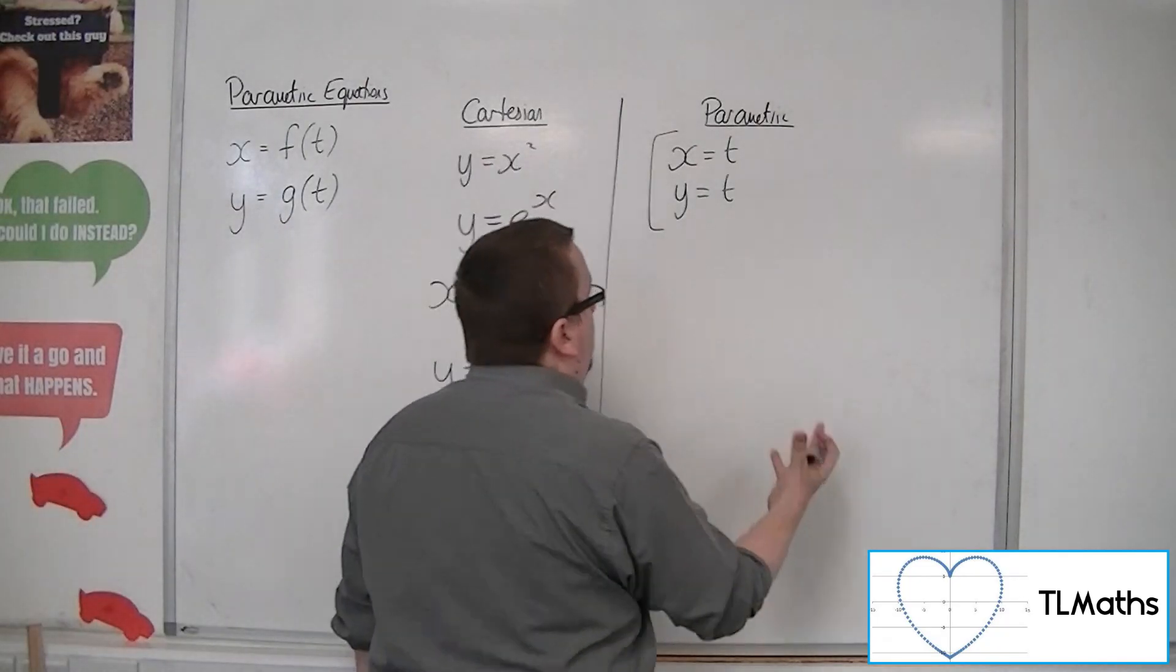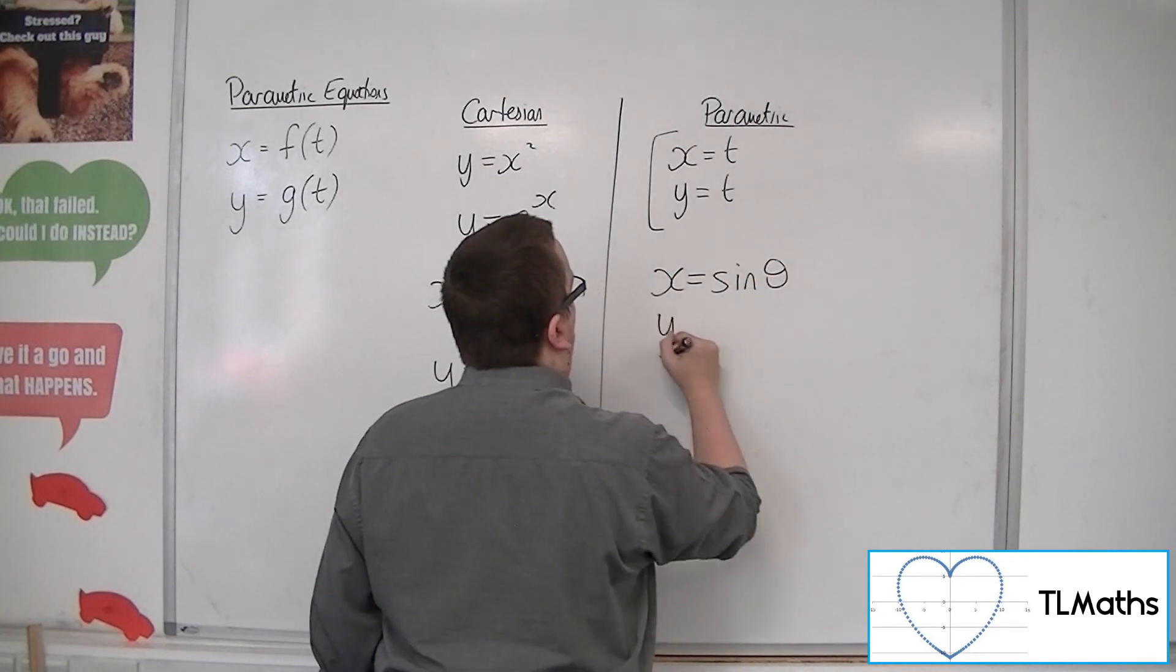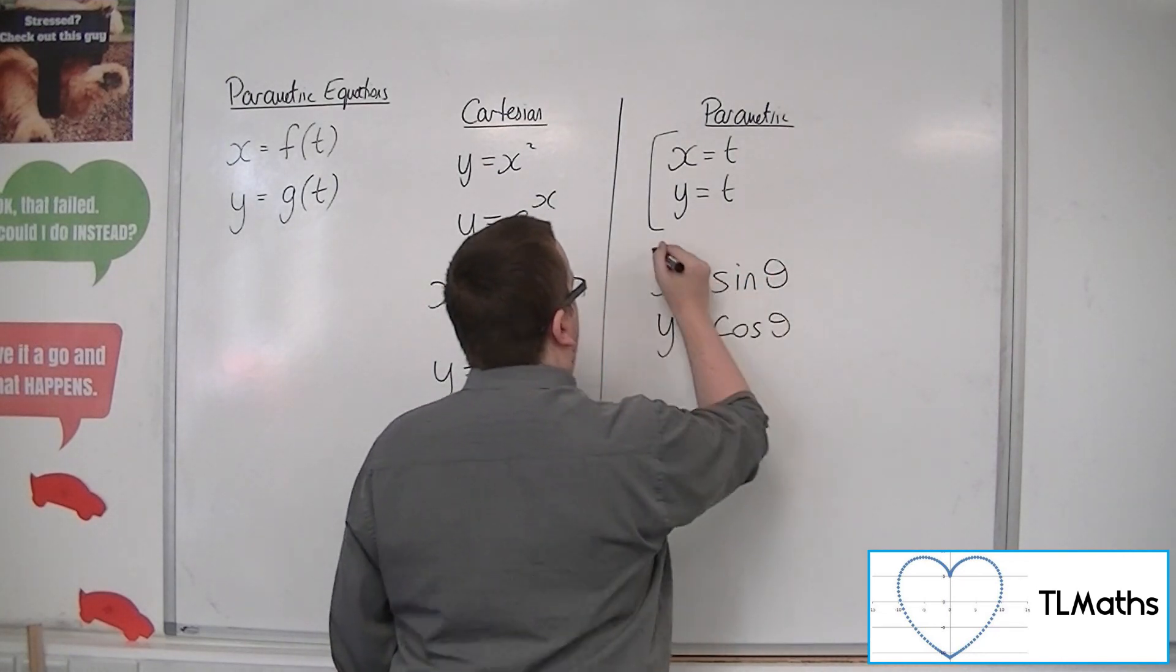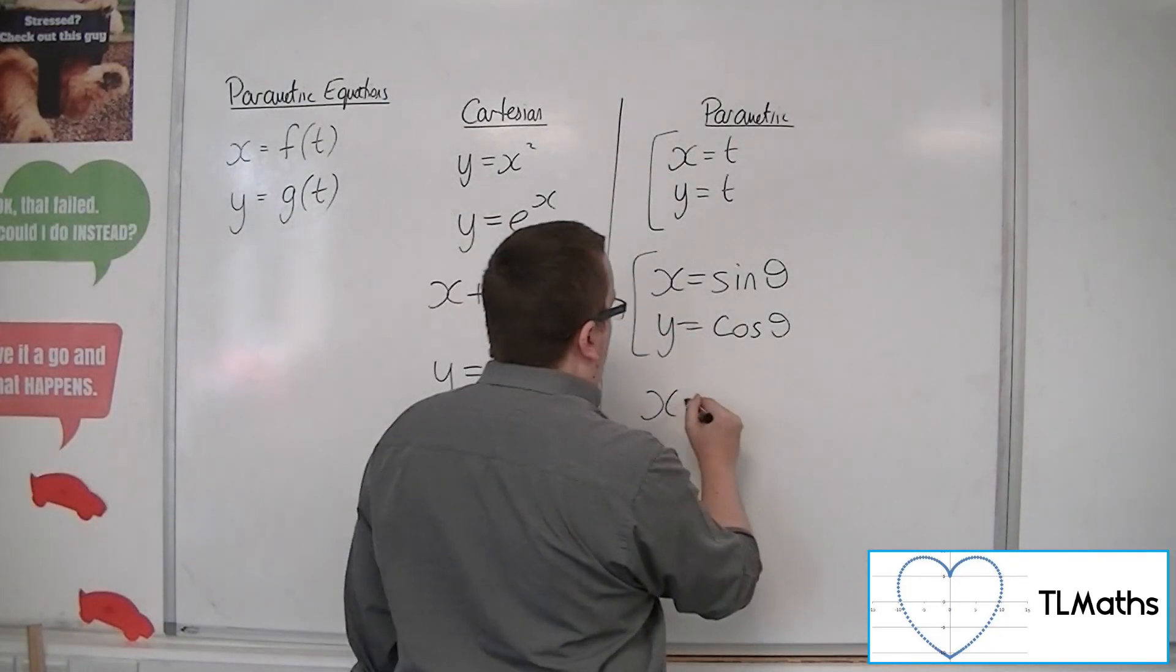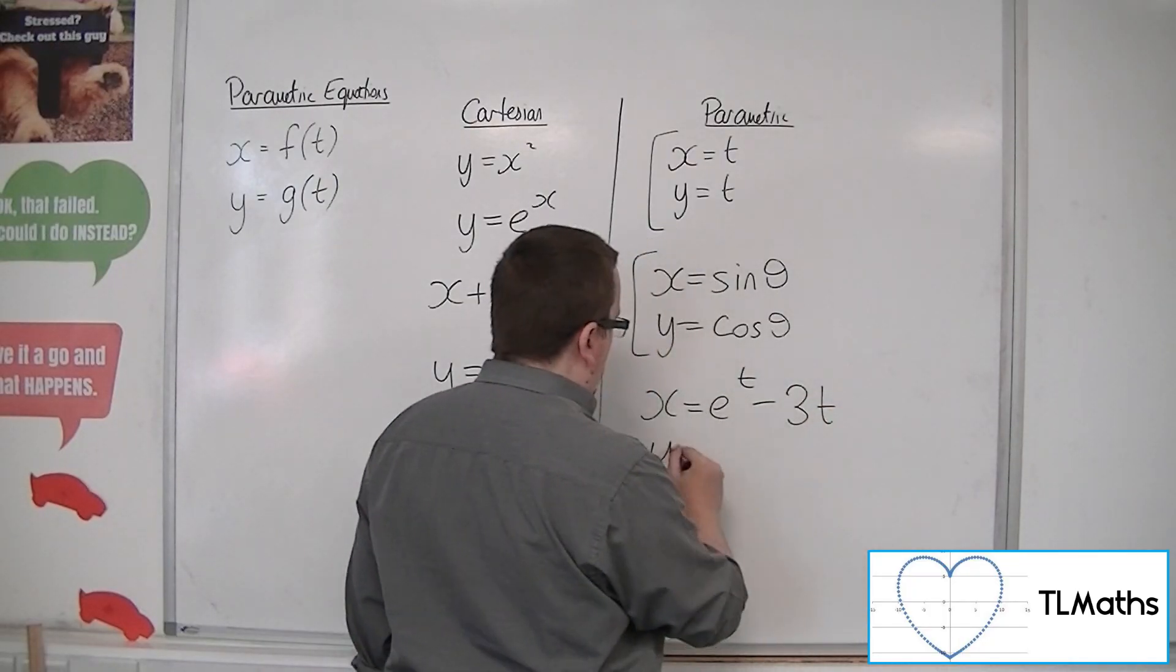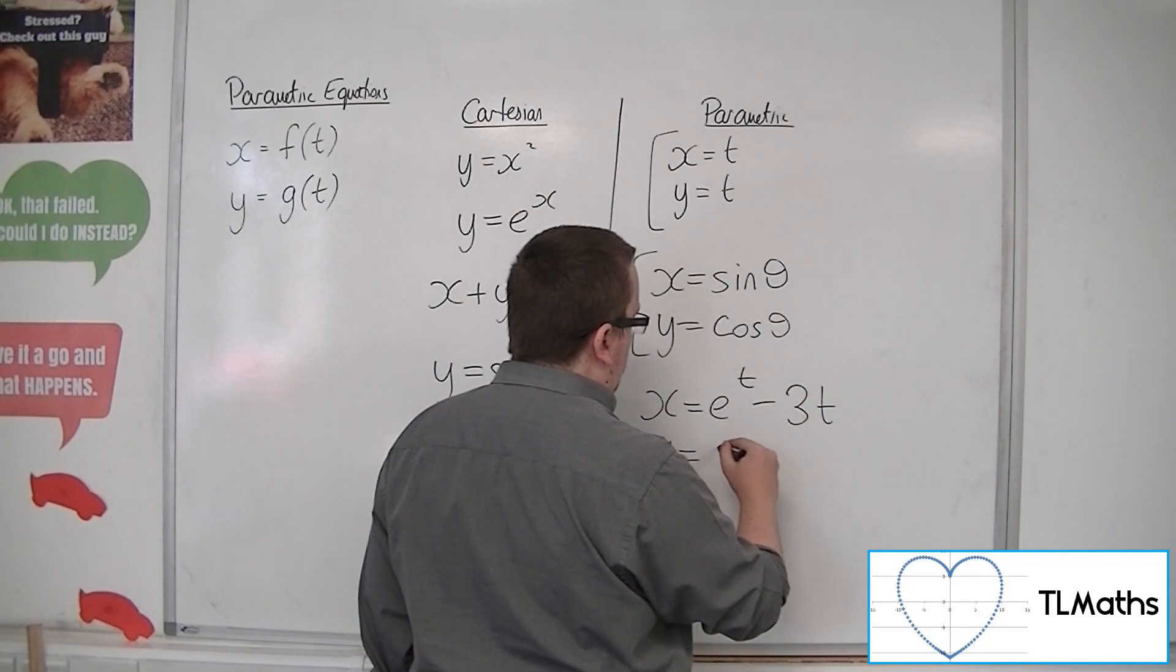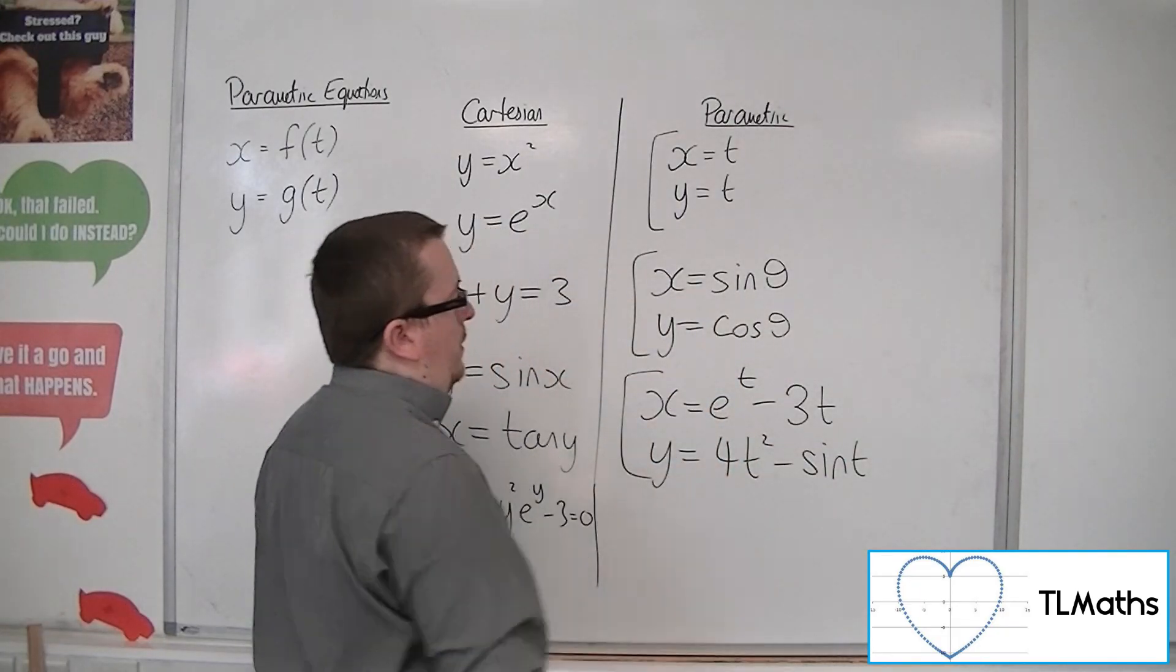Now we don't have to use t as the parameter. We could have x equals sine theta and y equals cosine theta, or x equals e to the t minus 3t, y equals 4t squared minus sine t.